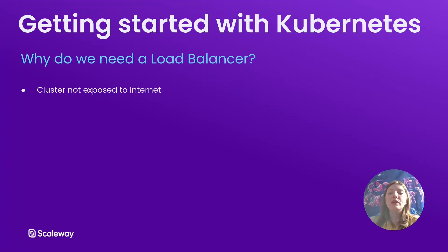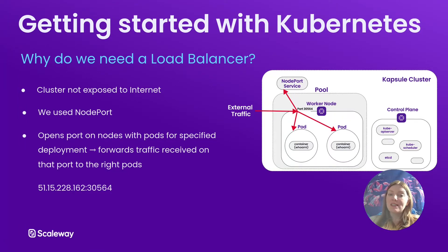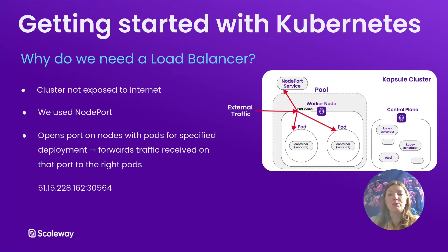In the previous video we solved this problem temporarily by creating a node port service for our cluster. What node port does is it opens a port on each node in a cluster that contains pods for the specified deployment you set up when configuring the node port service, and it then forwards any external traffic received on that port to the right pods. So in practice this allowed us to go to our node's external IP address in a browser — more specifically the socket address, because we also specified the open port.